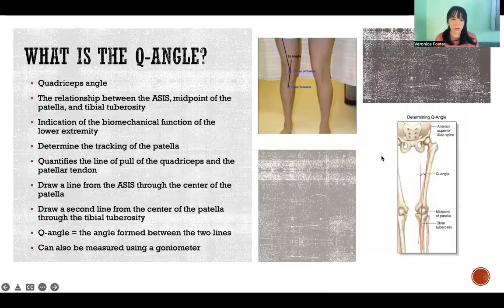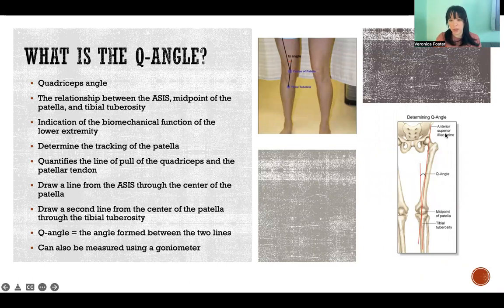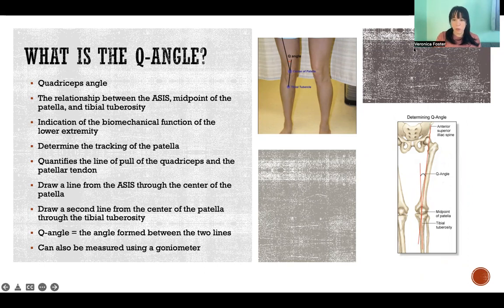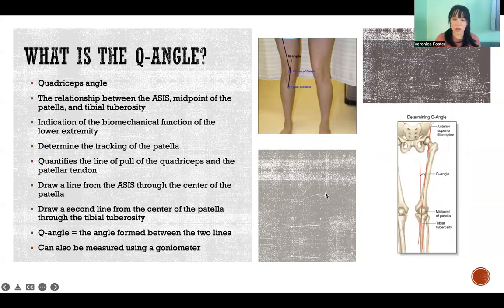So what is the Q angle? It stands for quadriceps angle. It's the relationship between the ASIS — the anterior superior iliac spine up here on the anterior side of the pelvis — the midpoint of the patella, and the tibial tuberosity. So it's an indication of the biomechanical function of the lower extremities.